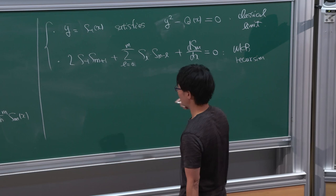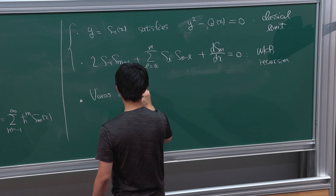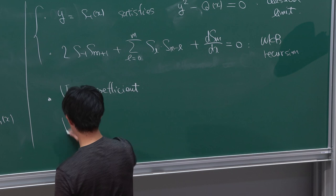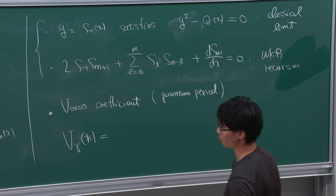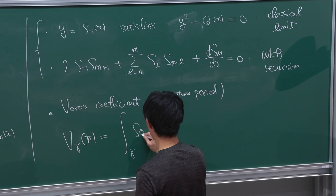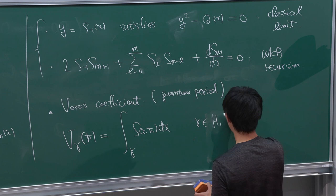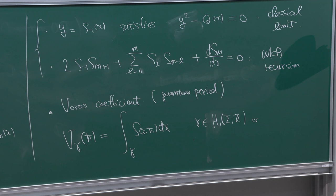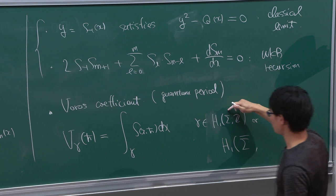We are also interested in the Bohr's coefficients, sometimes called the quantum period or all-order Bohr-Sommerfeld period. It is simply defined by the period integral of S along some cycles on the spectral curve. Here gamma is either from the first homology of our spectral curve, or we can consider a relative homology version by compactifying sigma and adding poles of Q(x) as punctures, allowing paths with endpoints on the pole divisor.